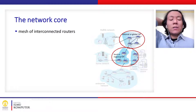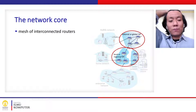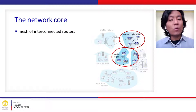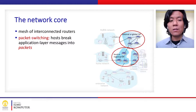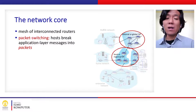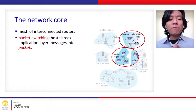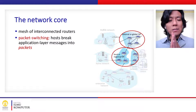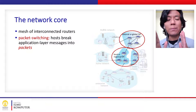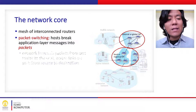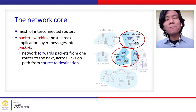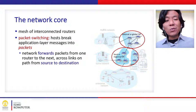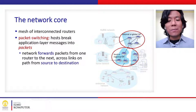Let's go back to the internet structure diagram that has been shown before. The network core consists of interconnected routers. The main function of the routers is to do packet switching. Packet switching is whenever the host in the end system sends a message to the destination, it will break the message into smaller chunks of packets. The network core routers will forward the packets from one router to another, from the source to the destination. Those two functions are the main functions of the network core.